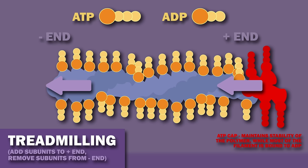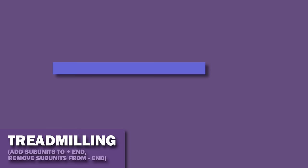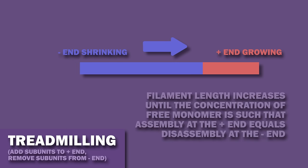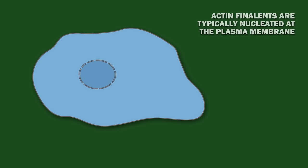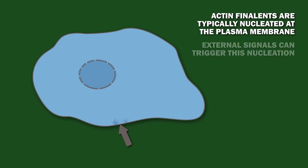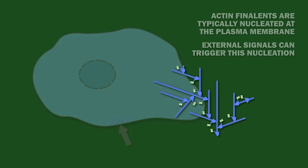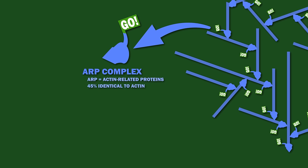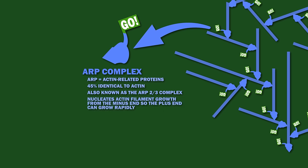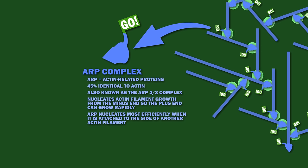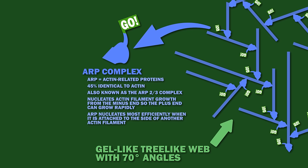Treadmilling is observed in actin filaments and microtubules, mostly in actin filaments. In this process, the filament appears to be moving, but really one end is growing while the other is shrinking. Growth of the polymer proceeds until the concentration of free monomer is such that the growth at the positive end equals disassembly at the negative end. Actin filaments are typically nucleated at the plasma membrane, and external signals can trigger this nucleation. Nucleation is promoted by the ARP complex — ARP stands for actin-related proteins, because they are 45% identical to actin. The ARP complex, also known as the ARP2-3 complex, nucleates actin filament growth from the minus end so the plus end can grow rapidly. ARP nucleates most efficiently when it is attached to the side of another actin filament, resulting in a gel-like, tree-like web with 70-degree angles.